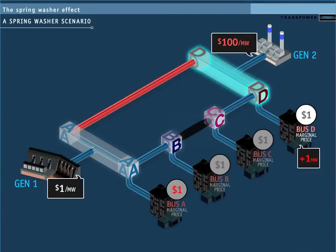For bus D, because AD is limited, the next megawatt of load cannot come from generator 1, so it would have to be supplied by generator 2 for $100. So the marginal price at bus D increases to $100.